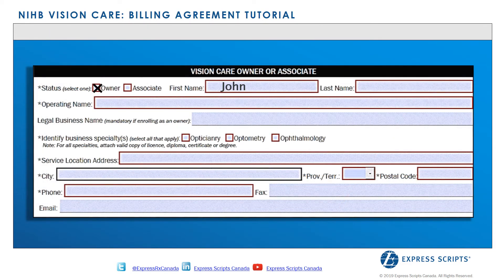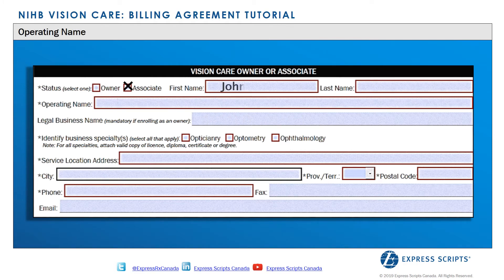Providers who choose to enroll as an owner must indicate their operating name and legal business name. An example of an operating name is John Doe's Optical, and an example of a legal business name is 12345 Ontario Limited. Providers who choose to enroll as an associate must indicate their first and last name, operating name, and legal business name. An example of an operating name for an associate is John Doe.